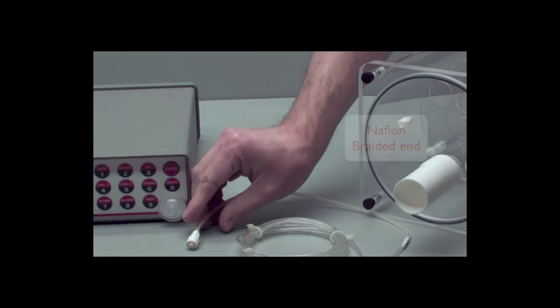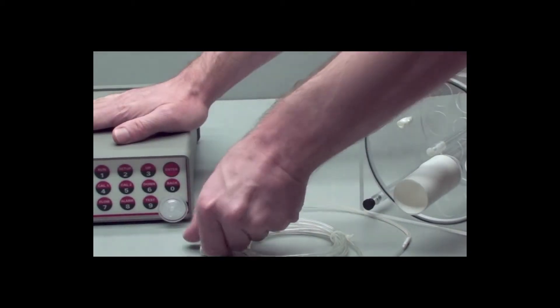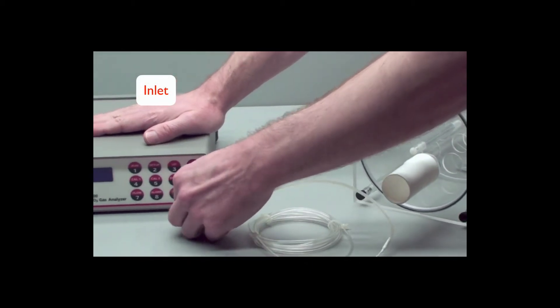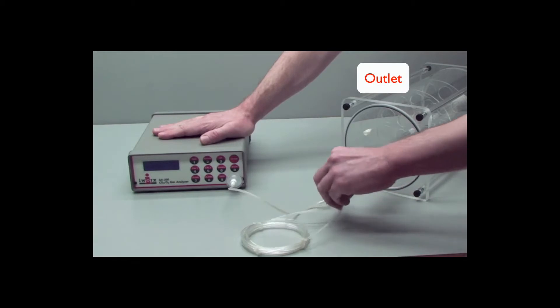Next, take the clear Nafion tubing and take the braided end, and that goes to the front inlet of the gas analyzer. The other end then goes to the outlet of the mixing chamber.